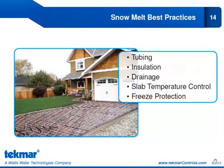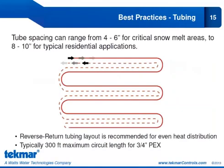We'll now look at best practices for snow melting, covering tubing, insulation, drainage, slab temperature control, and freeze protection. For tubing, spacing can range from 4 to 6 inches for critical snow melt areas, to 8 to 10 inches for typical residential applications. A reverse-return layout is recommended for even heat distribution. The typical maximum circuit length for 3/4-inch PEX is 300 feet — it is not advised to exceed 300 feet.